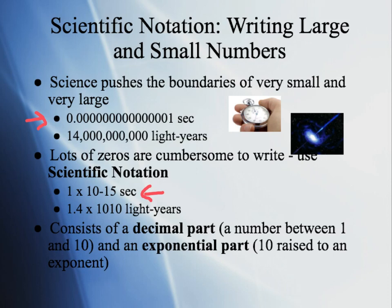The same thing with really big numbers, as we see here in light years. 14 billion light years — instead of saying 14 with nine zeros behind it, we can say 1.4 times 10 to the 10th power in light years. That's how we represent 14 billion in scientific notation.